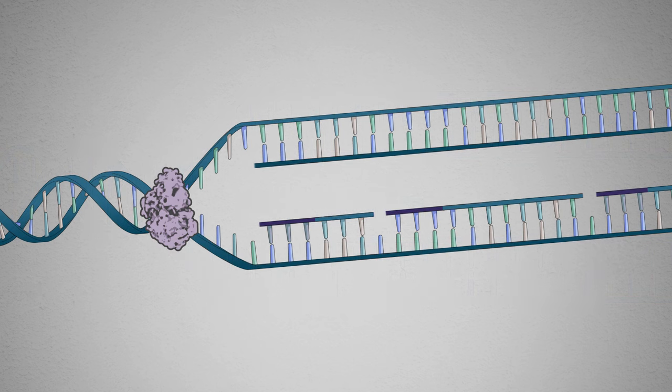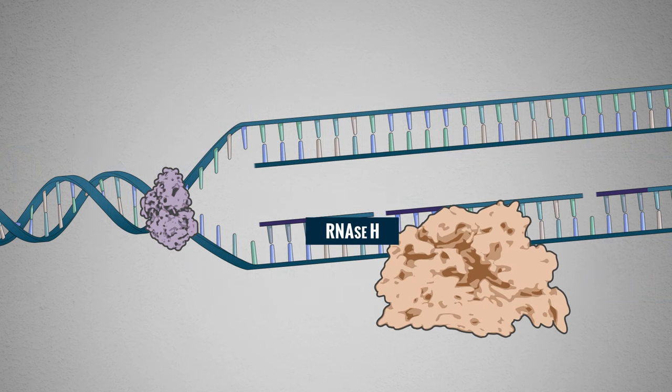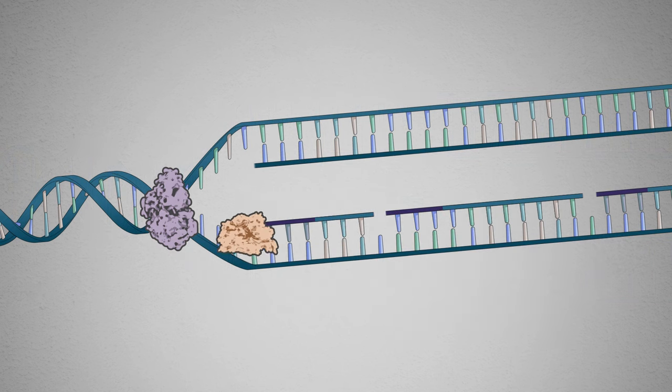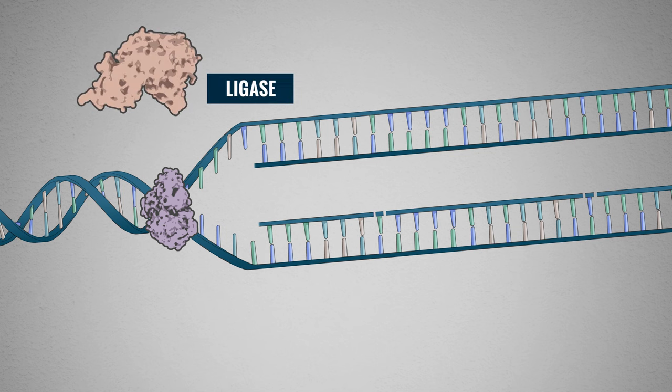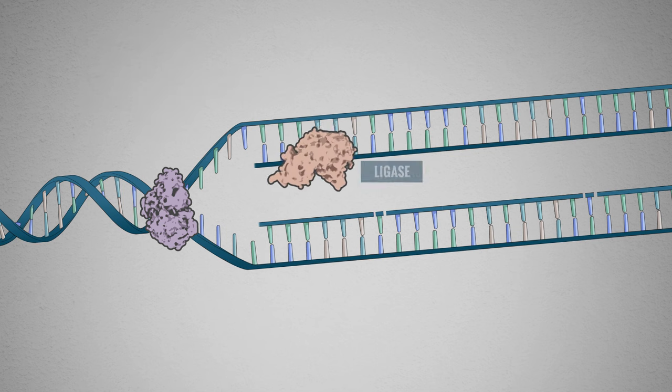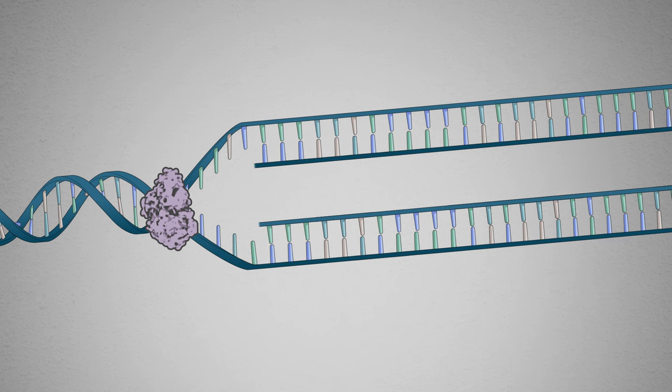As replication proceeds, RNase H recognizes and removes RNA primers bound to the DNA template. DNA polymerase III can then fill in the gap left by RNase H. The DNA replication process is completed when the enzyme DNA ligase joins the short DNA pieces together into one continuous strand.